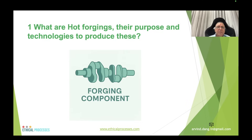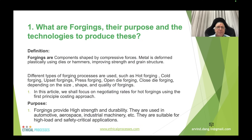This is a picture of a forging component. Forging are components shaped by compressive forces — metal is deformed plastically using dies or hammers, improving strength and grain structure. Different types of forging processes include hot forging, cold forging, upset forging, press forging, and open die forging, depending on the size, shape, and quality required.